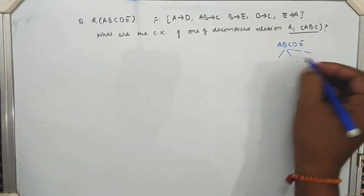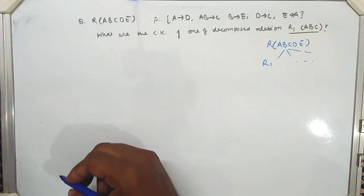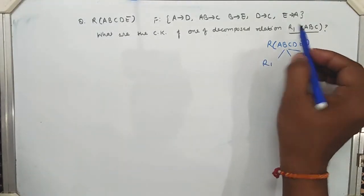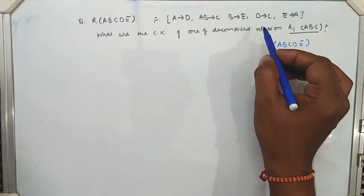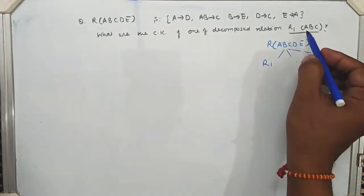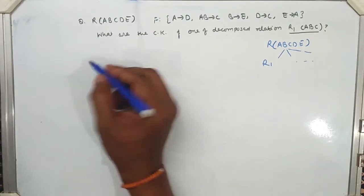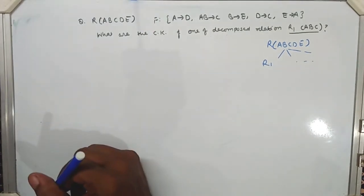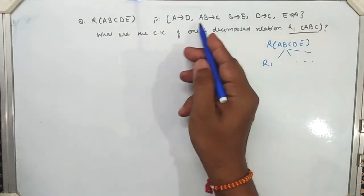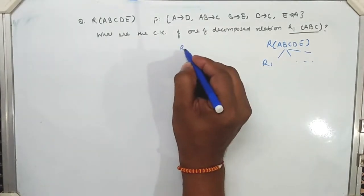In order to find out the candidate key for R1, I need to find out the functional dependencies specific to this decomposed relation R1. So how can we find them? We just check the closures of the given functional dependency set. I'll write down the R1 functional dependencies temporarily. Let me find out the closure of A — so A+ would be...